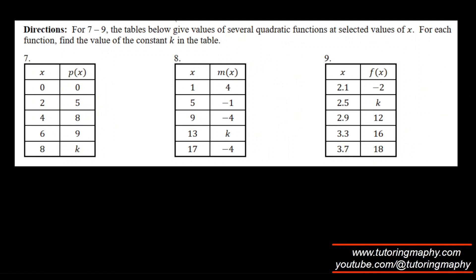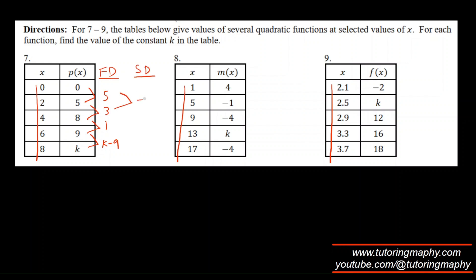Now the question asks us to find the value of k so that the table represents a quadratic function. The second difference must be constant. With x increasing by the same value, the first differences are 5, 3, 1, and k − 9. The second differences are −2, −2, and (k − 9) − 1 = k − 10. Setting k − 10 = −2 gives k = 8.